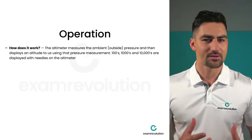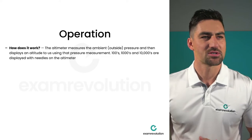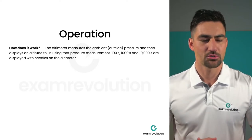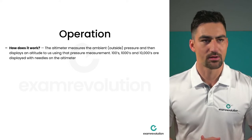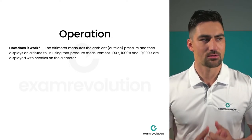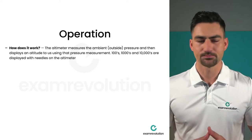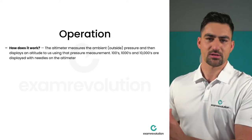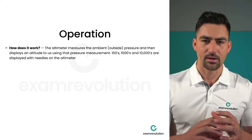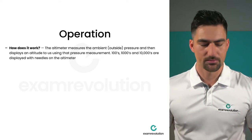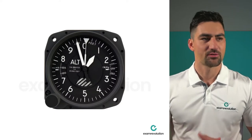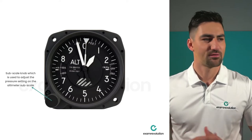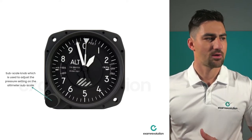How does the altimeter work? The altimeter measures the ambient or outside pressure and then displays an altitude using that pressure measurement. Hundreds, thousands, and ten thousands are displayed with needles on the altimeter. It basically just measures outside pressure and, according to that pressure, is calibrated to show us a specific altitude.